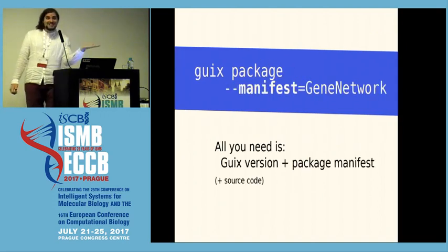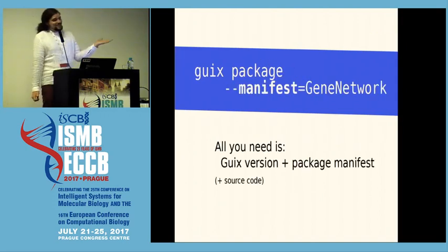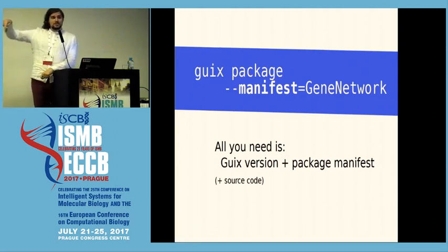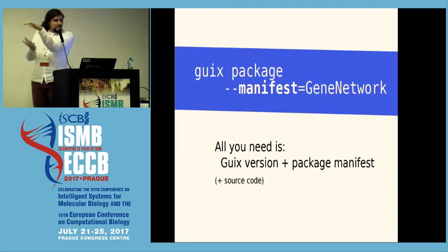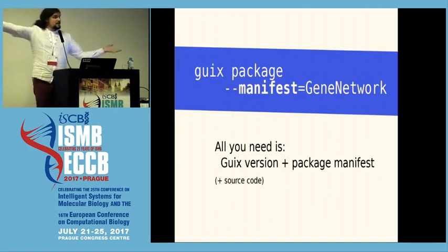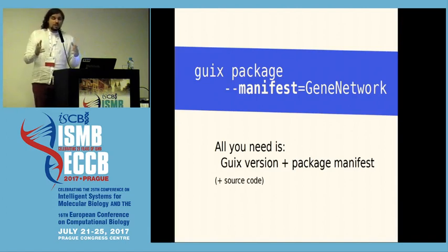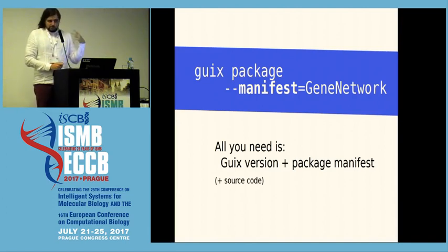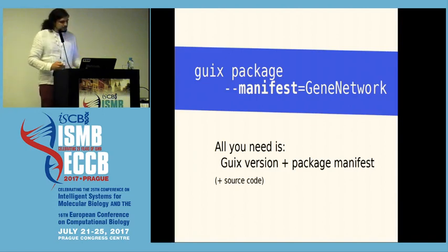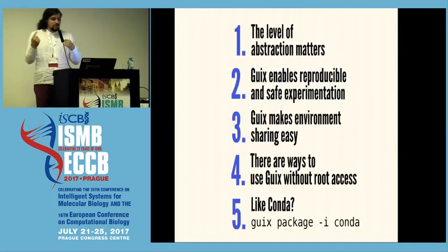But if the other person has Geeks, you can just say: here, I used this version of Geeks to build this, and this is the list of packages I used — here's a manifest. Geeks, instantiate that for me. That's symbolic sharing: you get that whole environment, and it's almost always bit-for-bit reproducible.